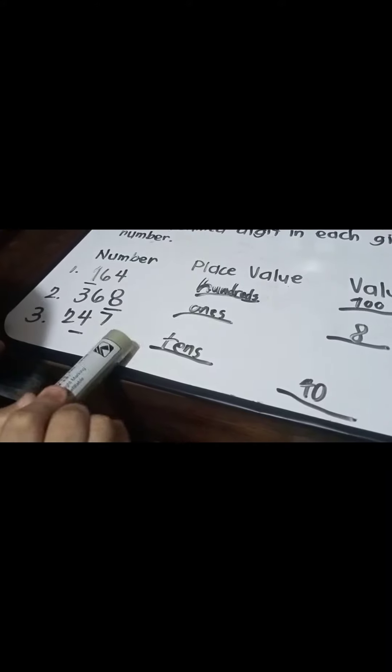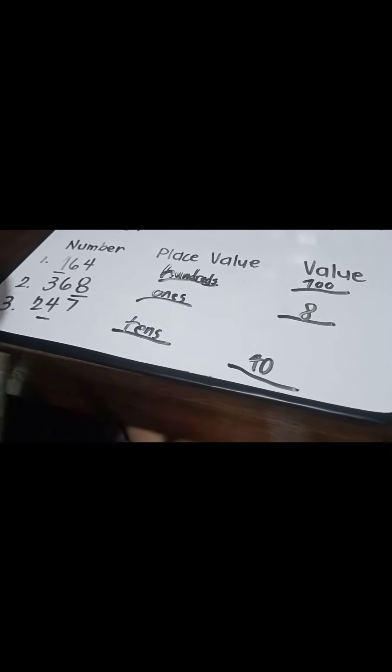Ito, 4. May isa siyang katabi. That means 10s. Yung 10s, diba may mga 0s katabi nila. So ngayon, ilalagay mo 4, tapos 0. Ede 40. Tama.